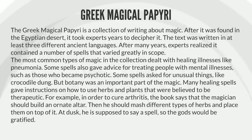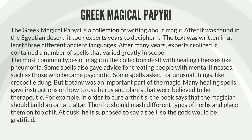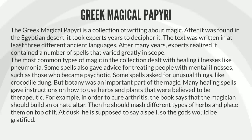The Greek Magical Papyri is a collection of writing about magic. After it was found in the Egyptian desert, it took experts years to decipher it. The text was written in at least three different ancient languages. After many years, experts realized it contained a number of spells that varied greatly in scope. The most common types of magic in the collection dealt with healing illnesses like pneumonia. Some spells also gave advice for treating people with mental illnesses, such as those who became psychotic.